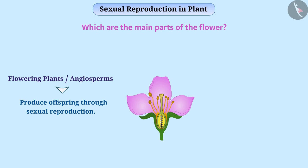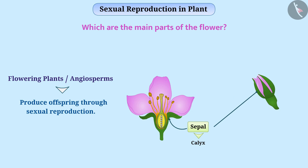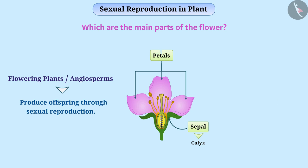The outer part of the flower which looks like green leaves is called sepal. Together the sepals form the calyx. The sepals protect the inner parts when the flower is in the form of a bud. The colourful part of the flower that looks like leaves are called petals. All the petals together are called corolla.